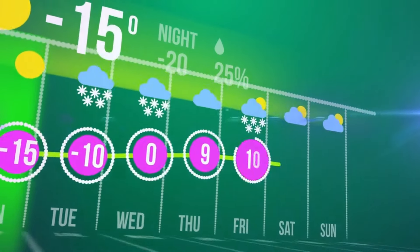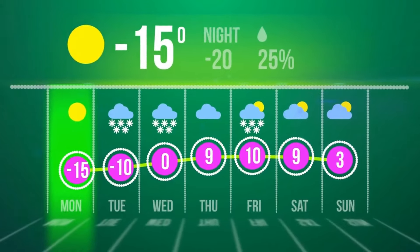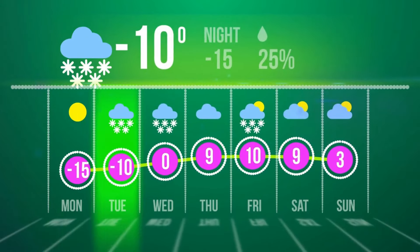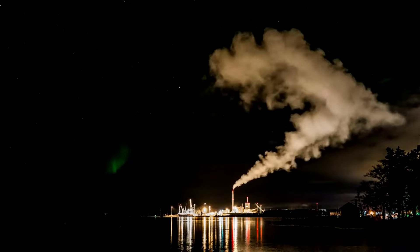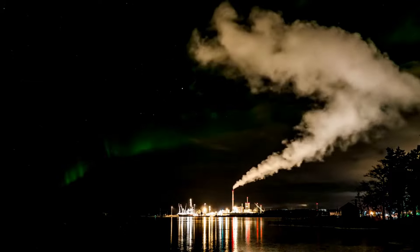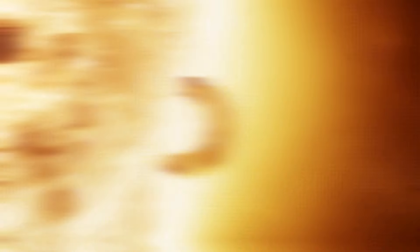Scientists study the Northern Lights using a combination of ground-based observations, satellites, and even balloons. These studies help us understand solar-terrestrial interactions and improve our ability to predict space weather. Auroras can impact modern technology, especially communications and navigation systems.